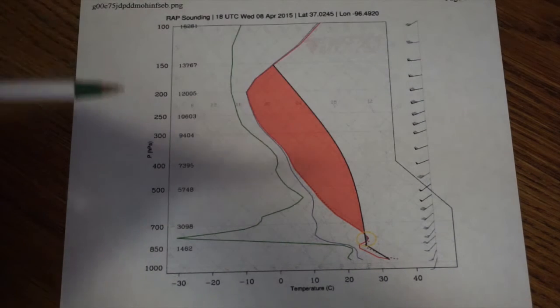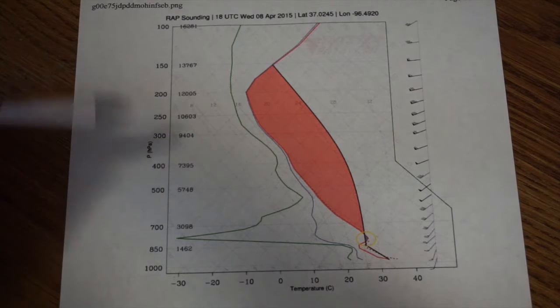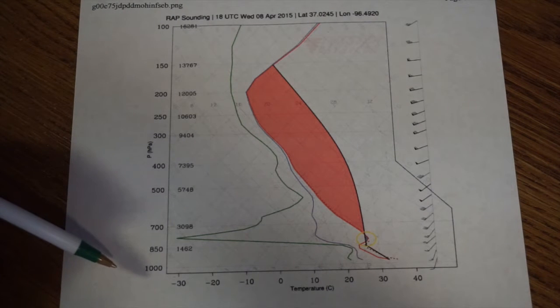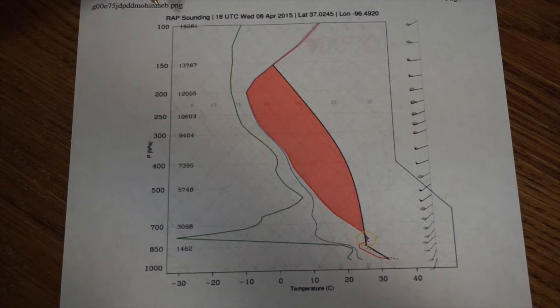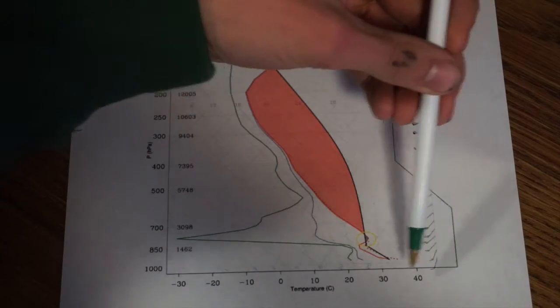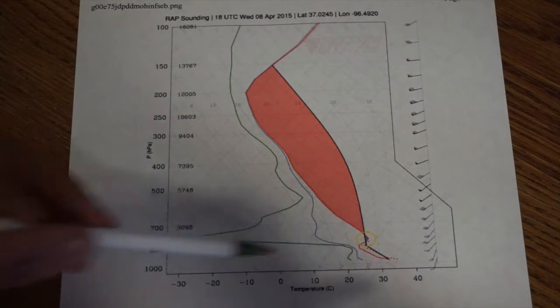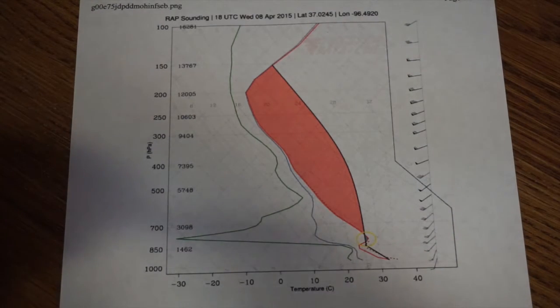If you're not sure what this is, this is a skew-T chart. On the left side here, we have our air pressure in millibars, also used for indicating your elevation, starting with 1,000 millibars, which is sea level, up to 100, which is about 50,000 feet. On the bottom here, you have your air temperature from negative 30 to positive 40 degrees in Celsius.